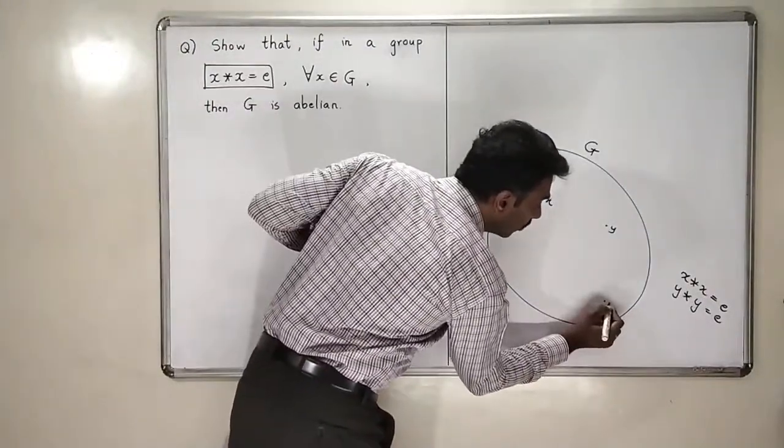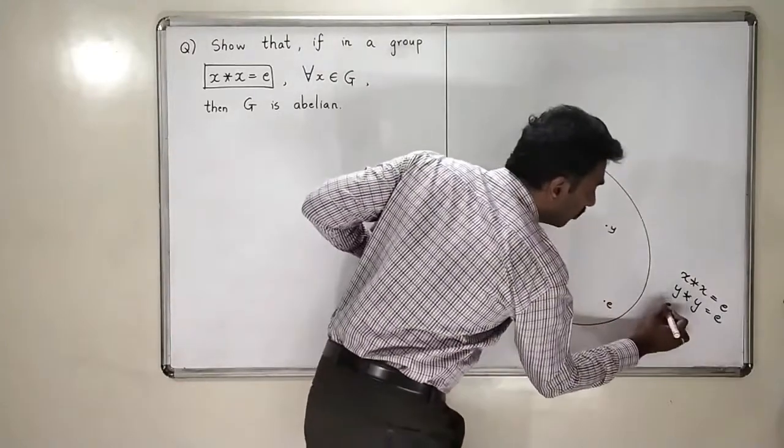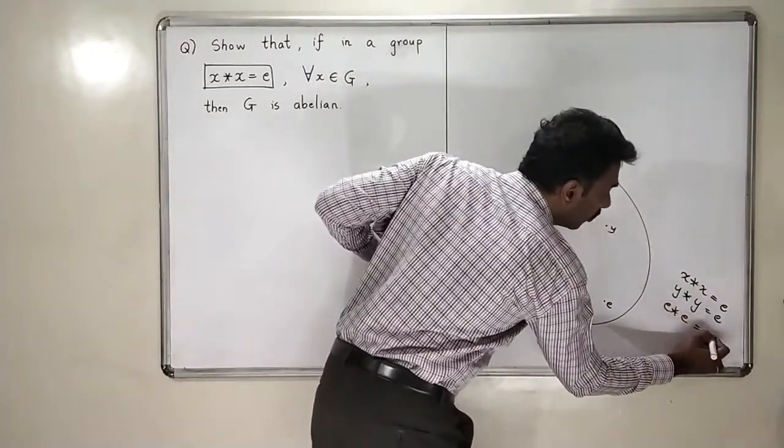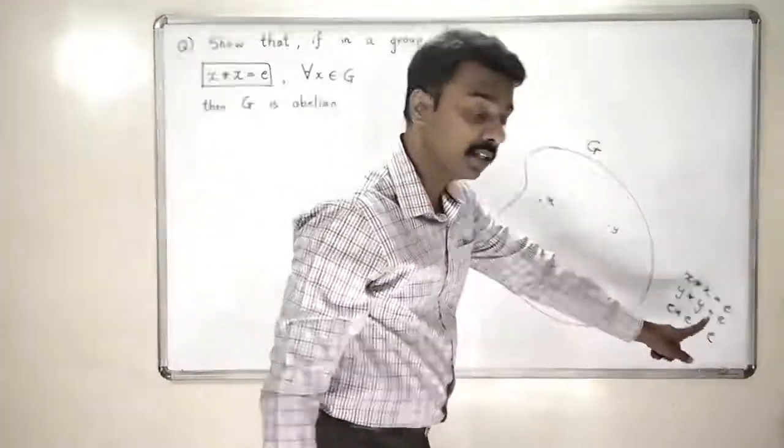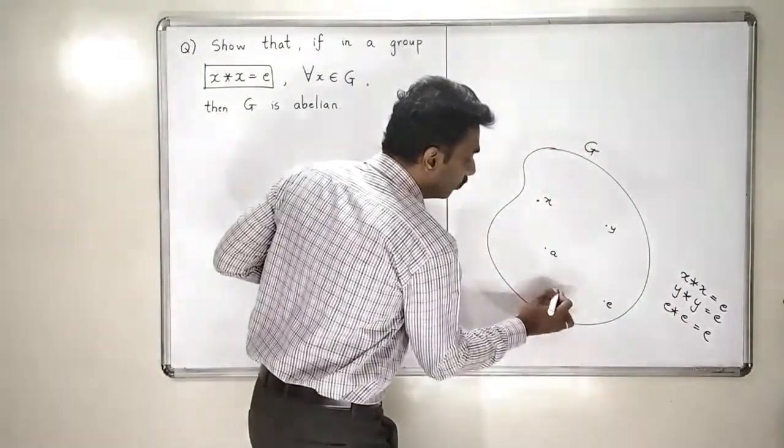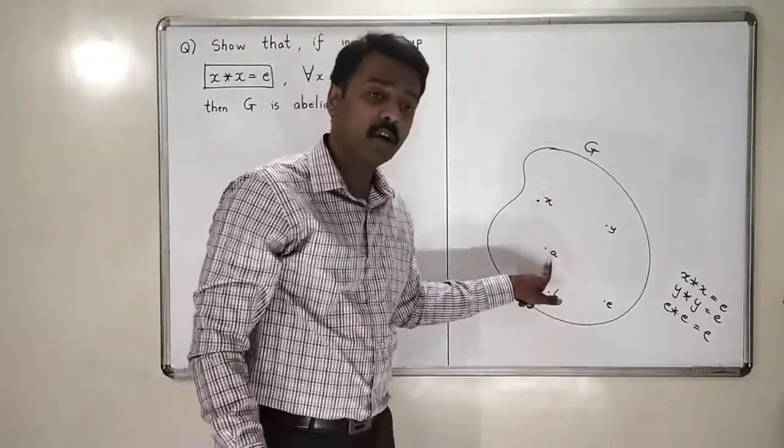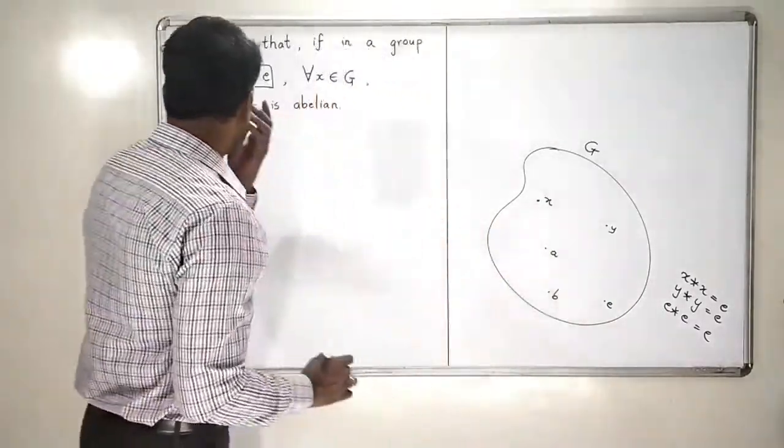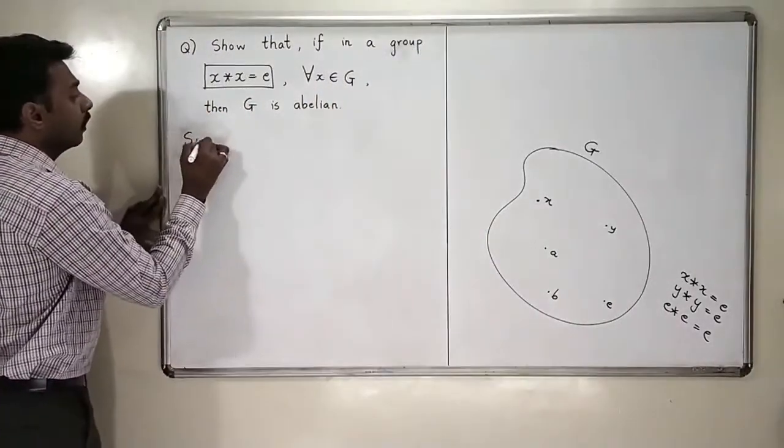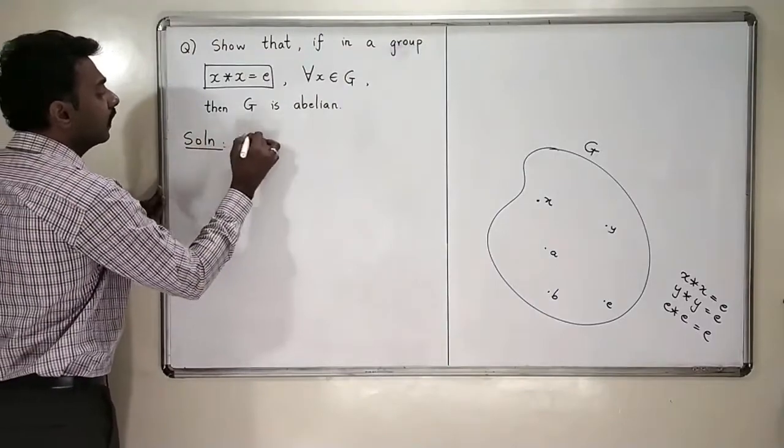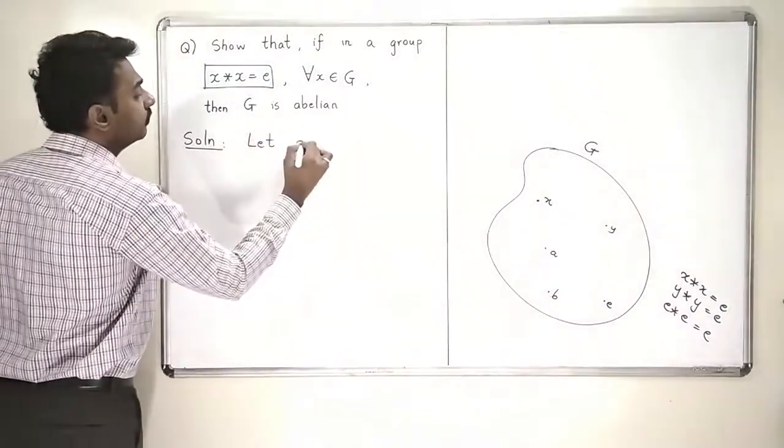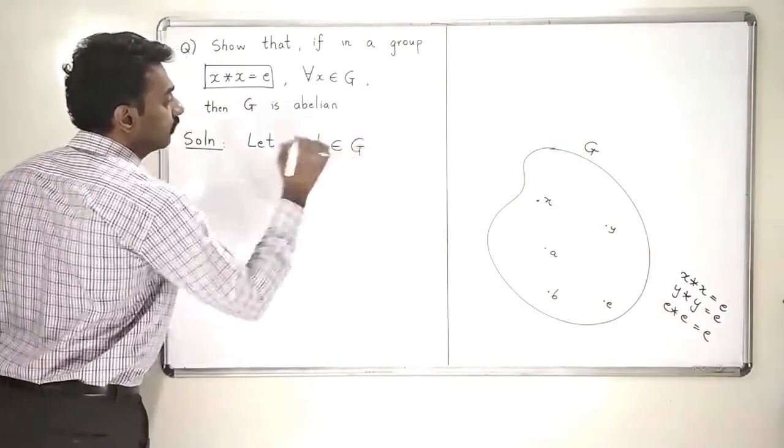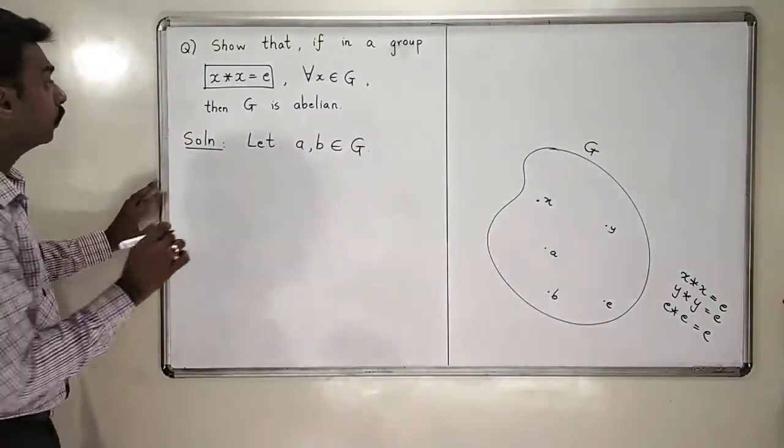Identity is also in this set, so identity will also obviously satisfy that. We always know that identity into identity is always identity. Suppose I take a in this group and b in this group. Again, a star a will also be identity and b star b will also be equal to identity. So I will now take two elements a and b in G.